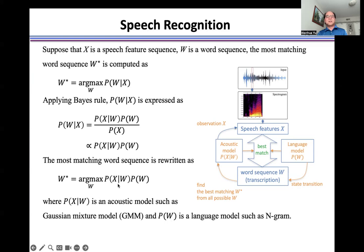Where P(X|W) is an acoustic model such as Gaussian mixture model, and P(W) is a language model such as N-gram language model.